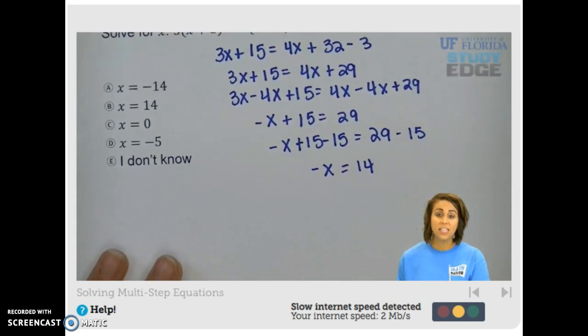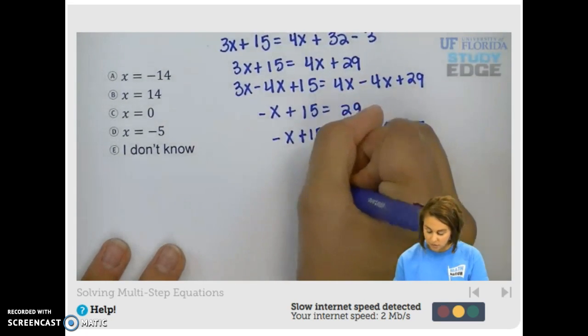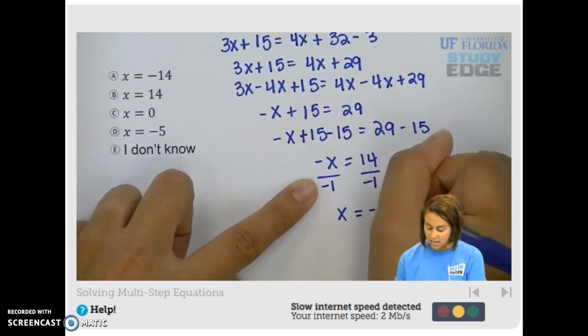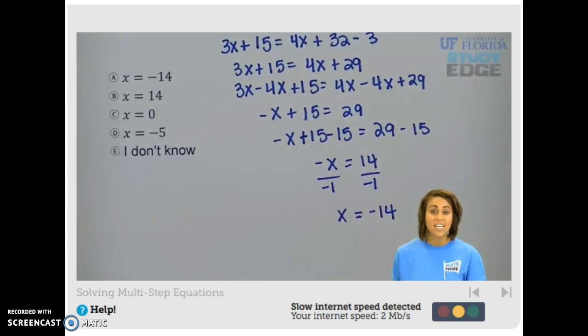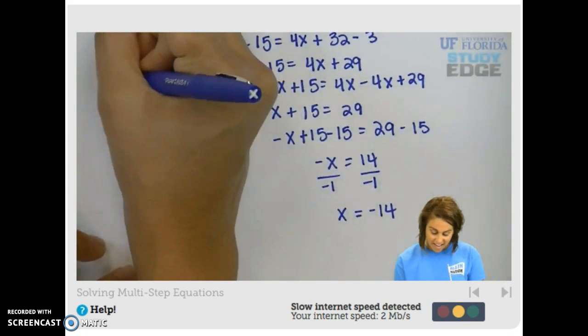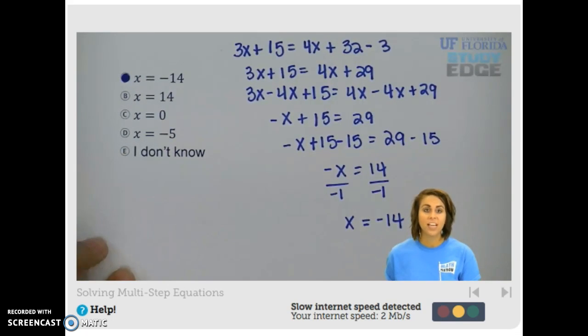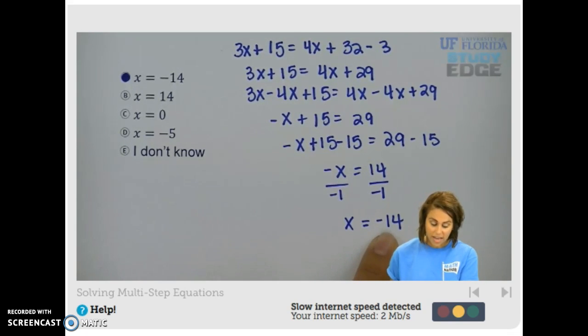And last but not least, to get negative x by itself, we've got to divide by negative 1. That gives us 1x on the left and negative 14 on the right. Is negative 14 one of our choices? Yes, it's choice A. So we've done our job, and we've solved this problem. If you chose B, you just missed your negative somewhere along the way.